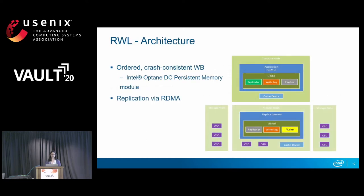Here is the high-level architecture for replicated write log, which is for persistent memory caching. It's implemented within libRBD. The replicator and write log components work together to flush data to the cache device. On the cache device, we create a pool file — by default about 1 GB — for every RBD image. The data is written to the device, and then the flusher flushes it down through the existing caches below and finally to the OSDs.